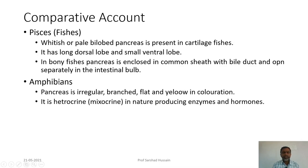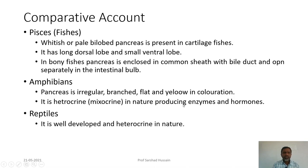In amphibians, the pancreas is irregular, branched, flat and yellowish in color. It is heterocrine (mixocrine) in amphibians, having both endocrine and exocrine functions — the exocrine part produces enzymes and the endocrine part produces hormones. In reptiles also, it is well-developed and heterocrine in nature.